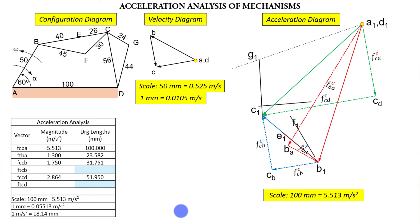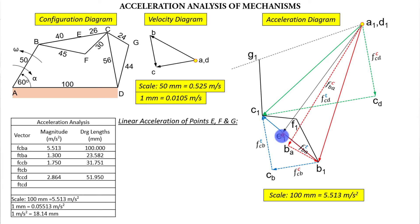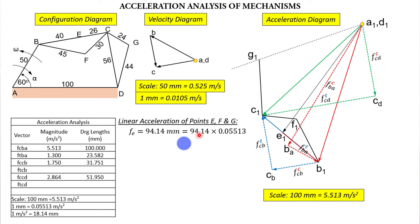For the linear accelerations of E, F, and G: connect E1 to the fixed point (A1/D1) and measure the length. E1 gives 94.14 mm. Multiply by 0.05513 m/s² per mm to get the linear acceleration of point E. For point F: join F1 to A1 — this measures 80.97 mm — multiply by the conversion factor to get F's linear acceleration in m/s².